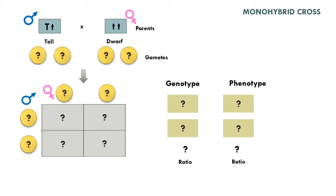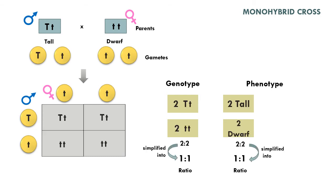Now it's time for your practice. Try to solve a monohybrid cross between tall and dwarf parents. Provide answers to the shapes with question marks on them. Pause this video while answering. If you got most, if not all correct answers, congratulations! You may now proceed to the next topic on dihybrid cross. If you still have difficulty solving a monohybrid cross, then practice more before proceeding to the next topics.